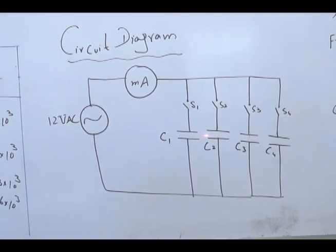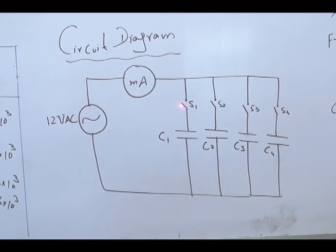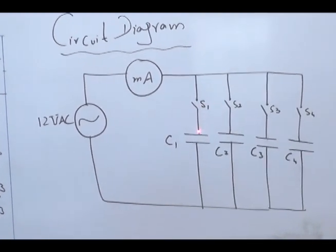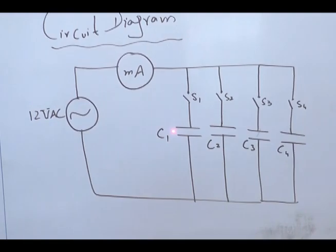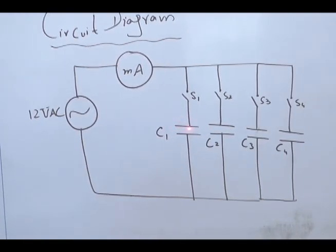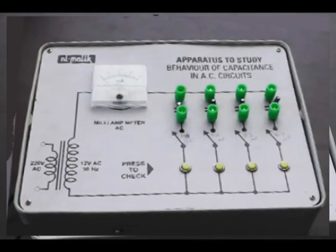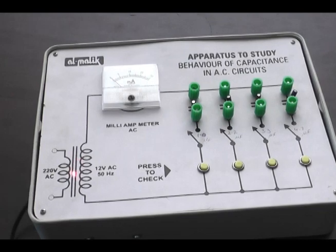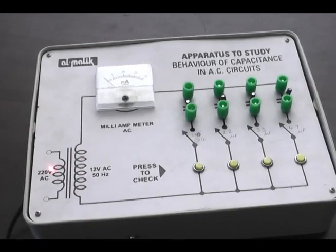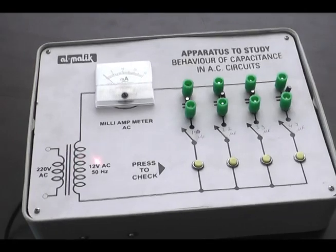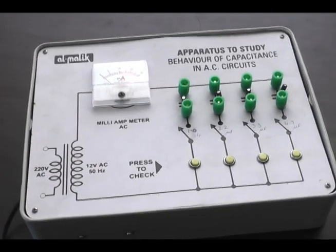These capacitors are connected in parallel. Each capacitor is connected with a switch, so we have four switches which will operate these capacitors turn by turn. We can use one capacitor at a time or more than one capacitor at one time. This is the step-down transformer — this is the primary, this is the core, and this is the secondary. The milli-ammeter measures the current in milli-amperes.